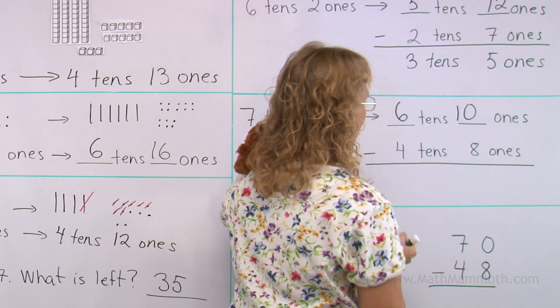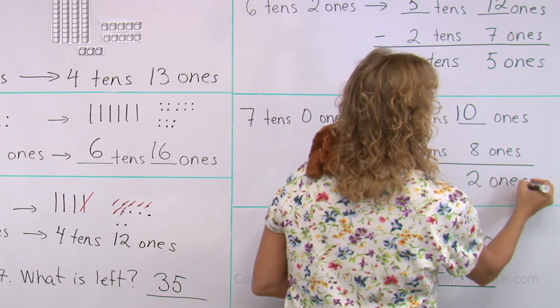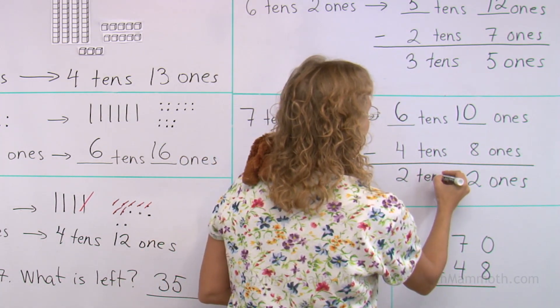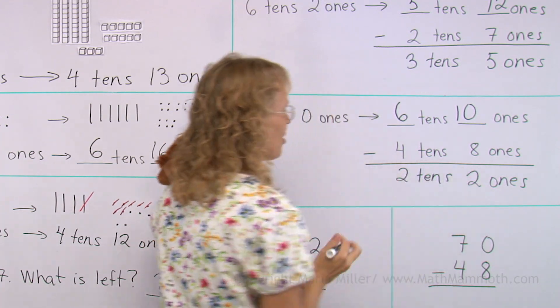Here, ten minus eight, two. And six minus four is two. Two tens, two ones, or twenty-two.